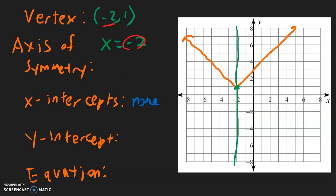So no x-intercepts. For the y-intercept, that is going to be positive 3. Now for the equation, I'm going to look at the vertex and write y equals absolute value. The x-coordinate is negative 2, so we change the sign inside — it becomes positive 2. And the y-value stays the same, so plus 1.